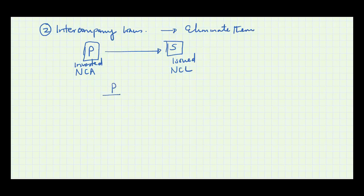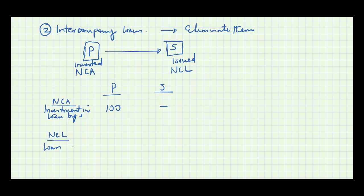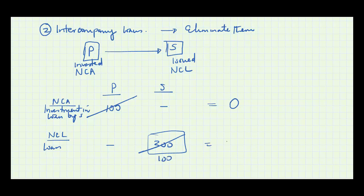For example, if P holds an investment in a loan by S of 100, and S has total loans of 300 on its non-current liabilities, that means 100 was given to the parent. That 100 cancels out — so under assets it becomes 0, and the loan liability reduces to 200, representing only the loans given to third parties.